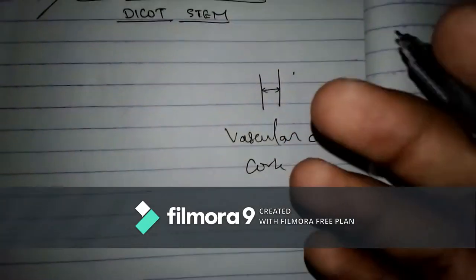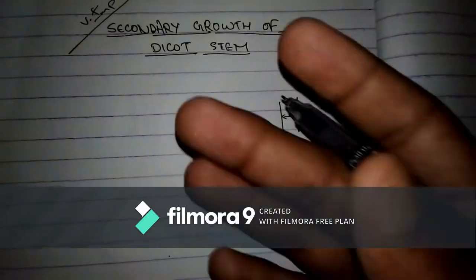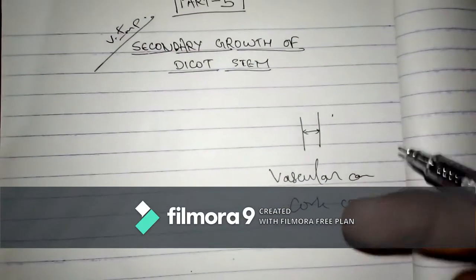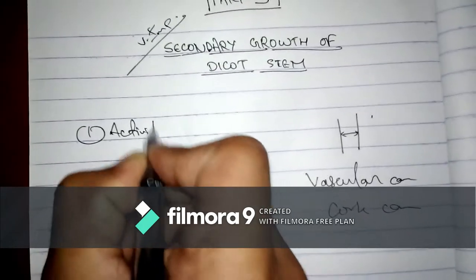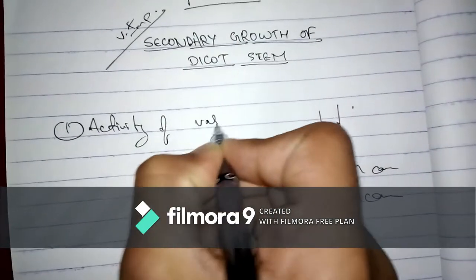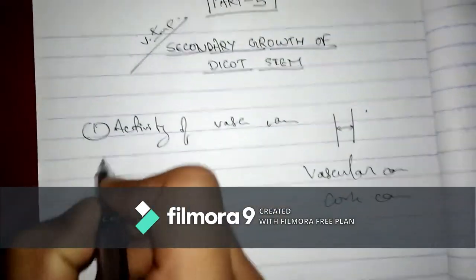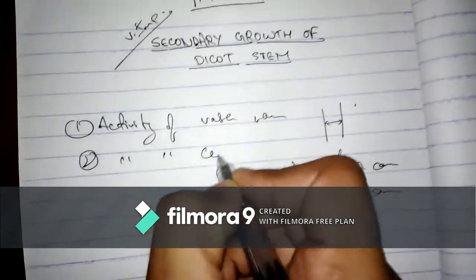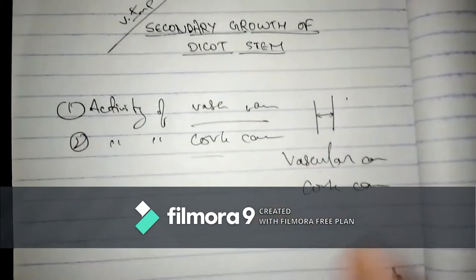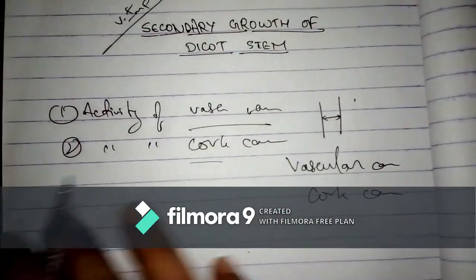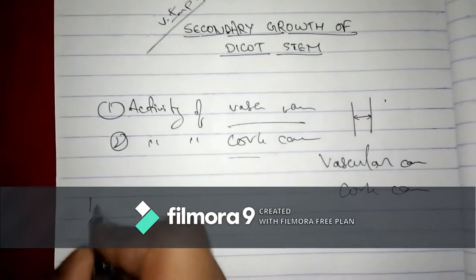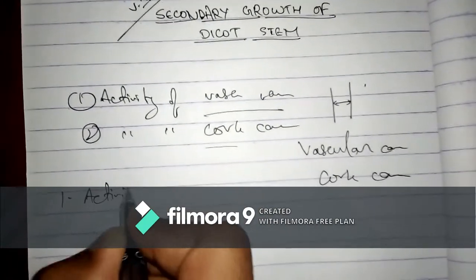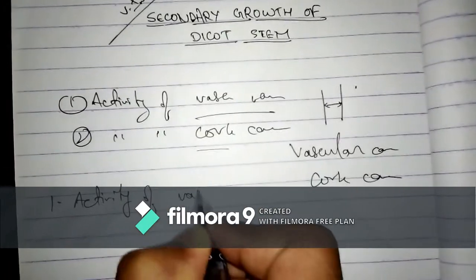On the basis of activities, we can describe secondary growth in two ways: first, due to the activity of vascular cambium, and second, the activity of cork cambium. About the vascular cambium we know already; about the cork cambium I will be telling at the end of the video. First, we need to write about the vascular cambium — so the first heading will be: activity of vascular cambium.